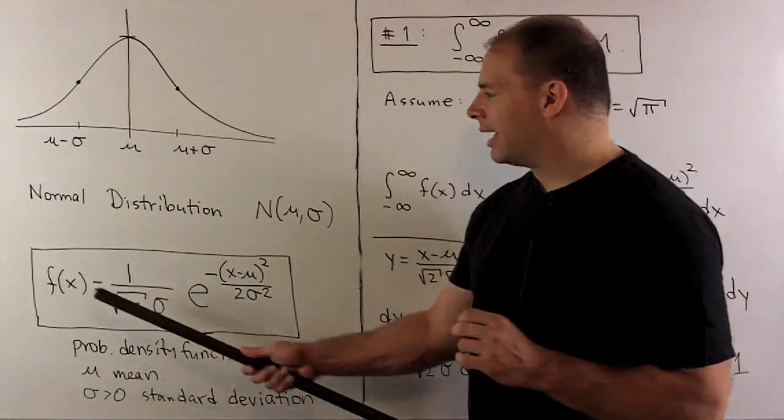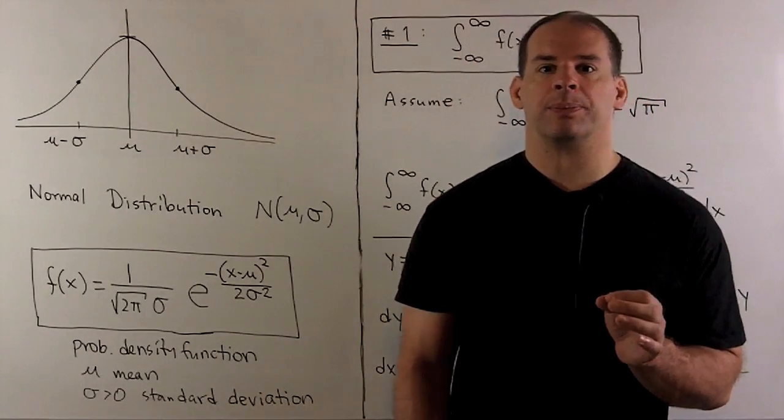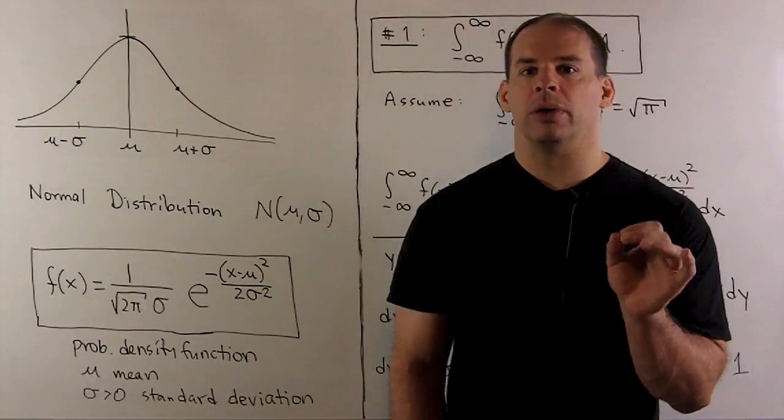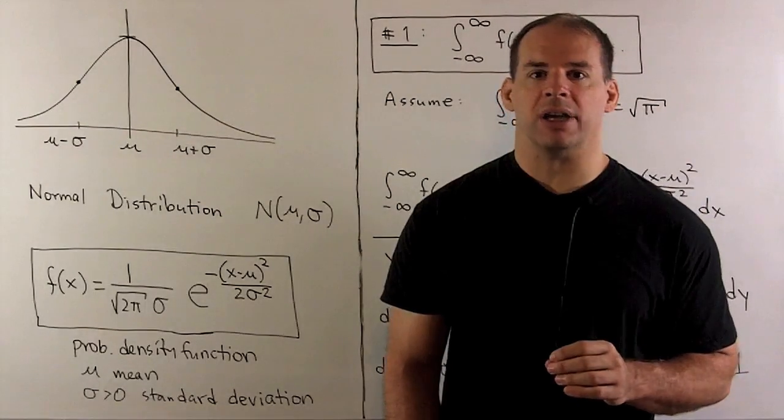Here, x is our variable, μ and σ are constants. We'll see that μ is the mean, σ, which is positive, will be our standard deviation.